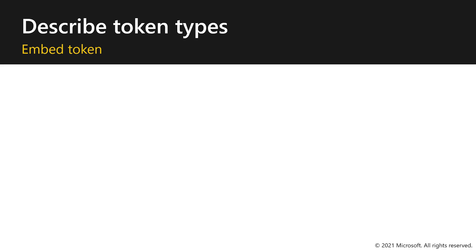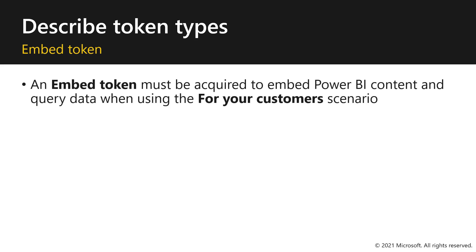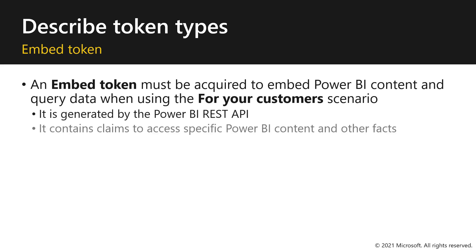The second type of token is the embed token, and it's a very different concept. An embed token must be acquired to embed Power BI content and query data when using the for your customers scenario. It is generated by using the REST API and contains claims to access specific Power BI content and other facts.